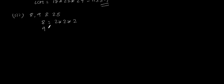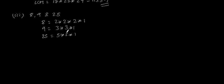9 can be expressed as 3 × 3. 25 can be expressed as 5 × 5. We can also multiply by 1 for each. So HCF will be 1 since there is no common prime factor among 8, 9, and 25.